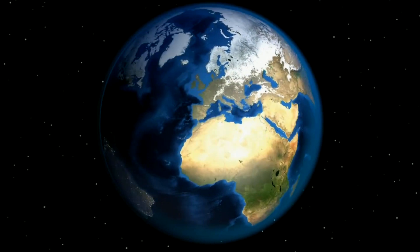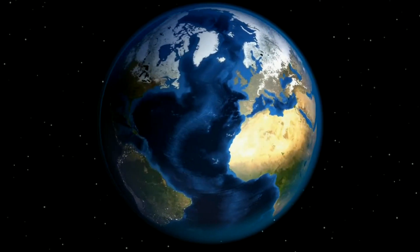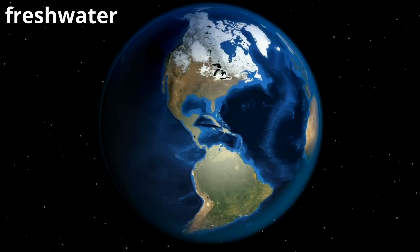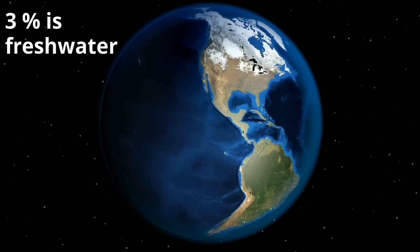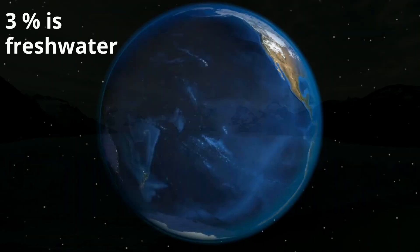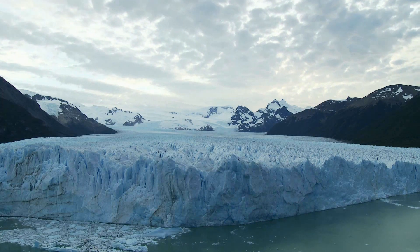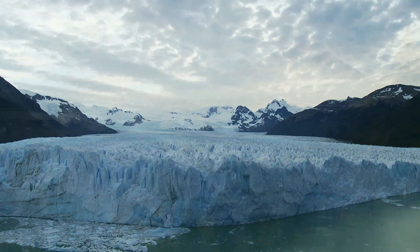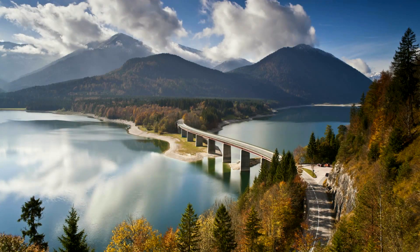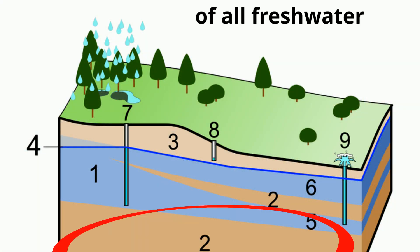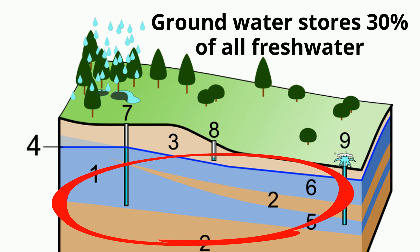The earth is roughly 70% water. However, only 3% of this water is fresh water. Much of this fresh water is frozen in glaciers. You'll find some of the water in rivers and lakes. But almost 30% of this fresh water is groundwater. But what is groundwater?